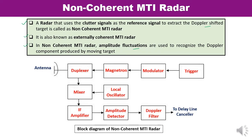This is the block diagram of a non-coherent MTI radar. A single antenna is used — the signal is both transmitted and received via this antenna, which is why a duplexer is used. During transmission, it connects the antenna with the transmitter section, while during reception it connects the antenna with the receiving section. A magnetron is used for signal generation, and the modulator and trigger control the transmitted signal.